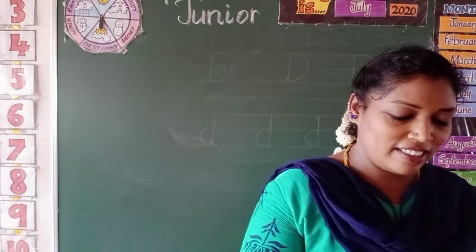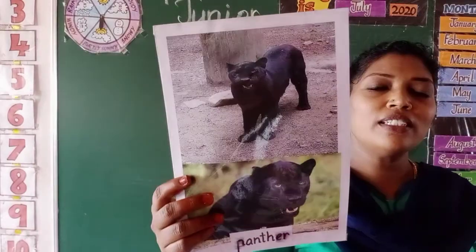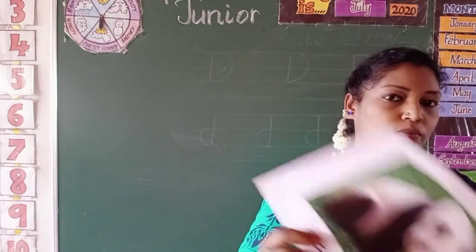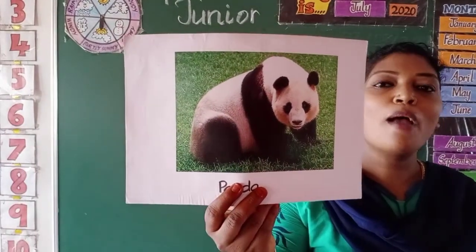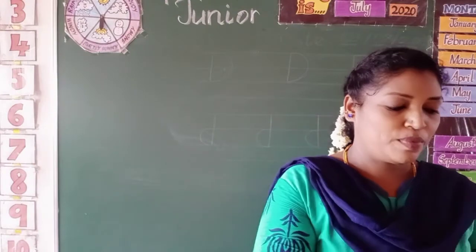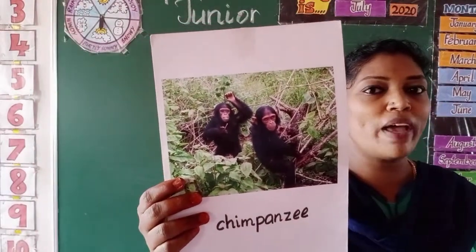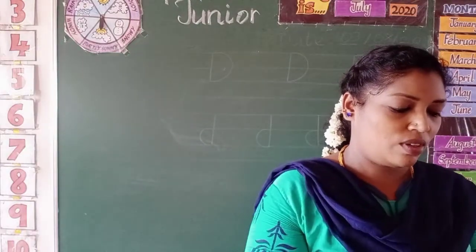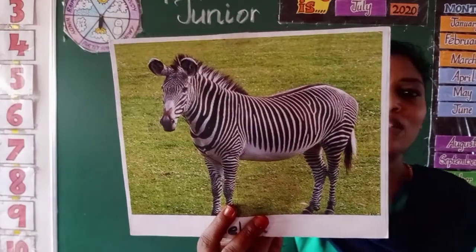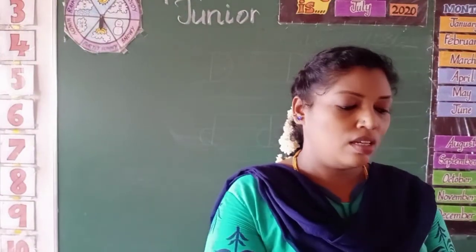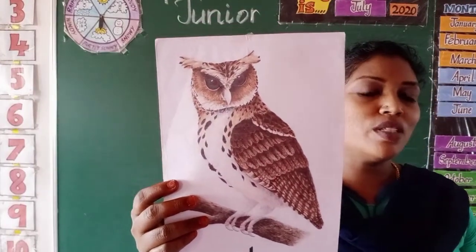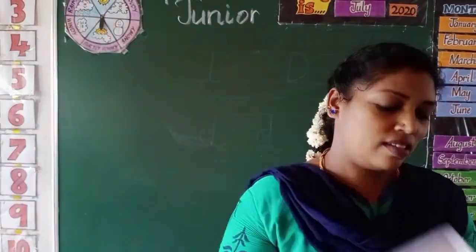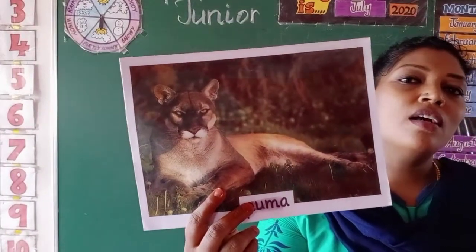Monkey. See where the monkey is sitting — on the tree. What animal is this? Black colour — it's a panther. This is panda. This one is chimpanzee. What about this? Gazelle. And this one? You know very well — zebra. This one is zebra.